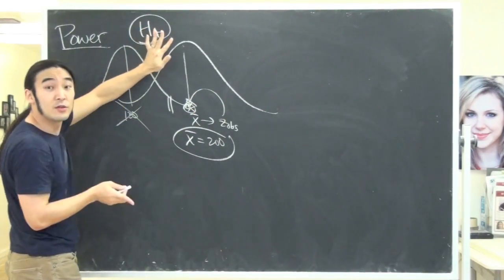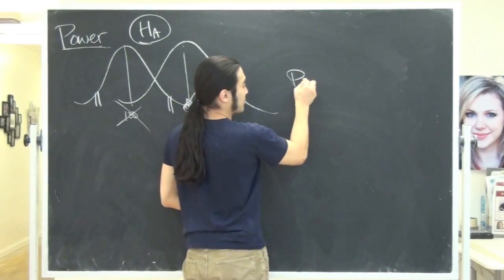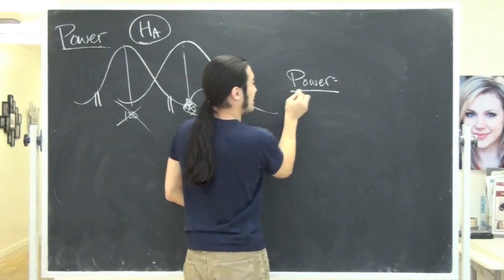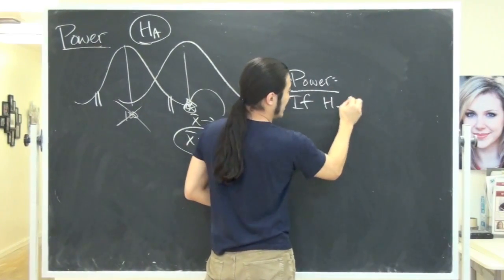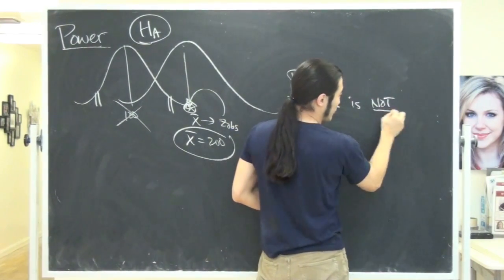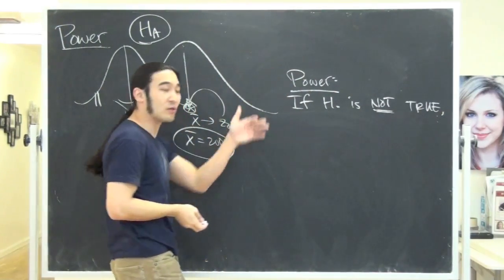But you didn't know that the picture looked like this. So what power means, so power works like this. So if the null is false, so if H0 is not true, then power is the probability you're going to notice.